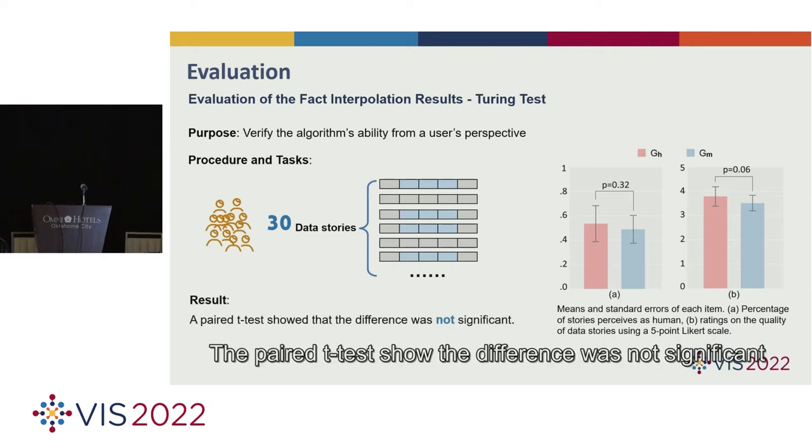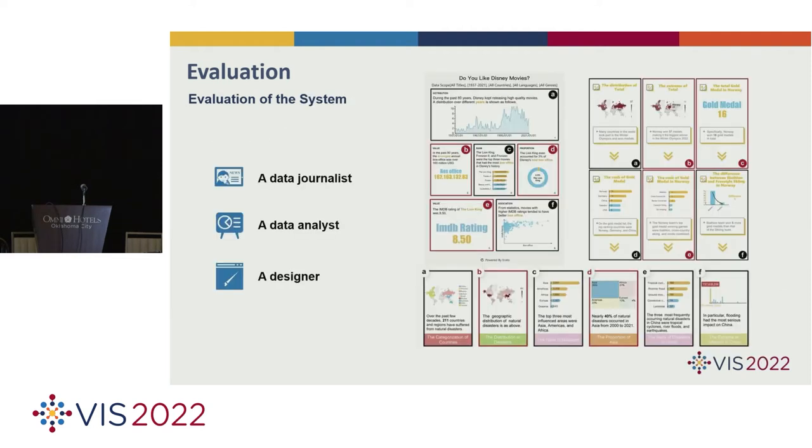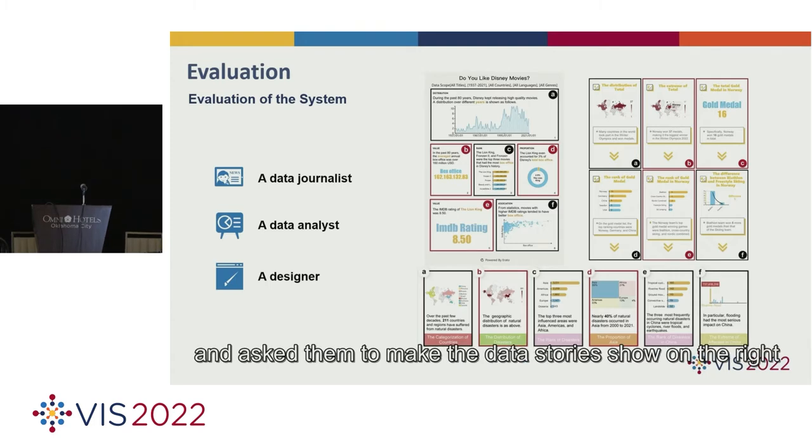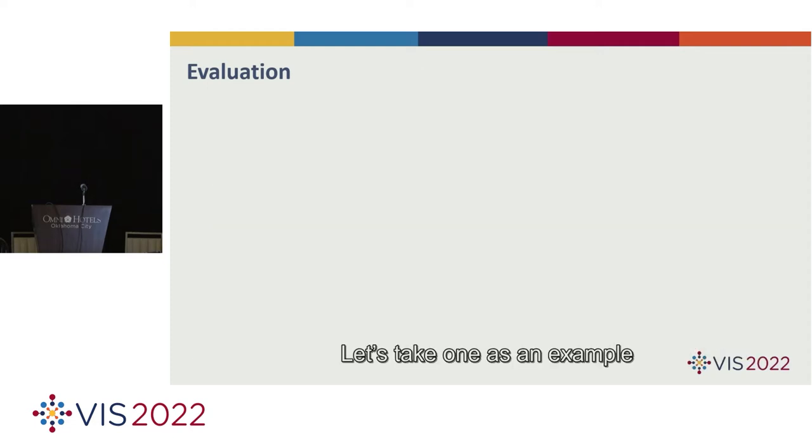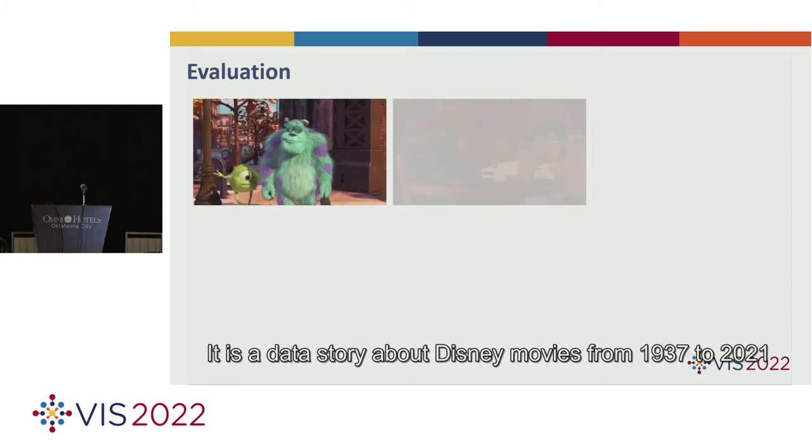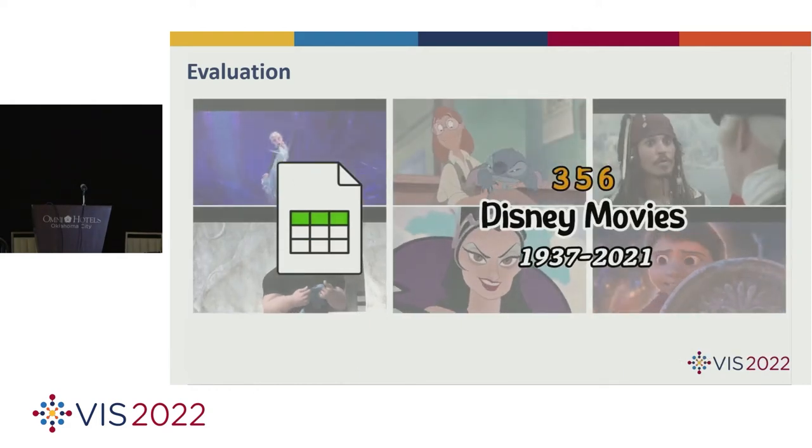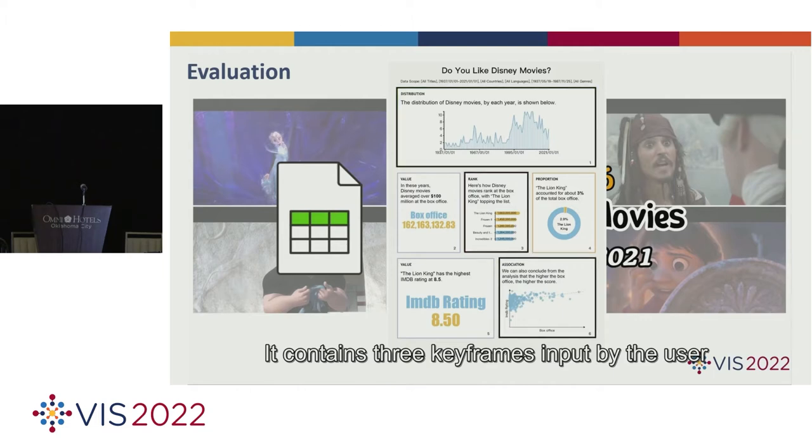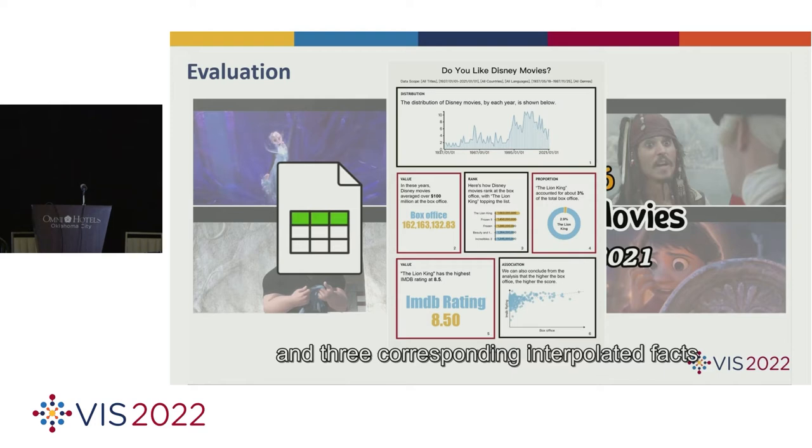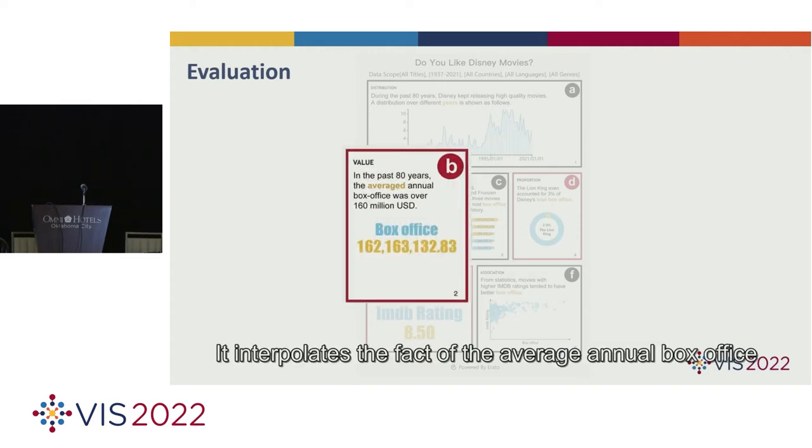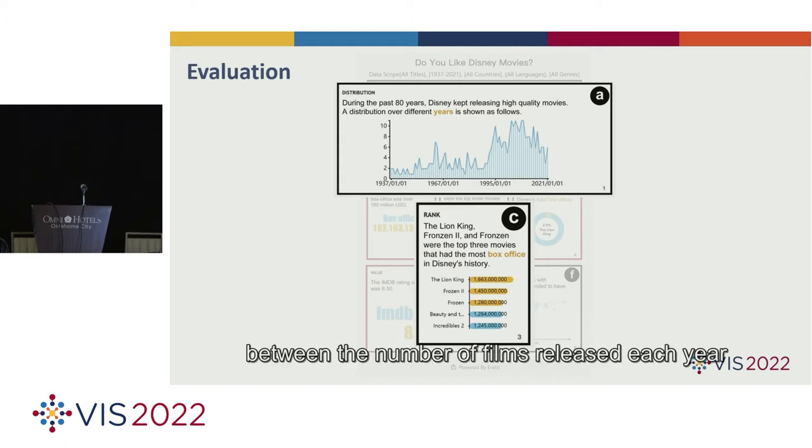Then, we mixed all 30 stories together and invited 50 participants to differentiate these stories. The paired t-test showed the difference was not significant. To further evaluate the usability of Erato, we conducted an interview with three domain experts and asked them to make data stories. Let's take one as an example. It is a data story about Disney movies from 1937 to 2021. It contains three keyframes imported by the user and three corresponding interpolated facts generated by our technique.